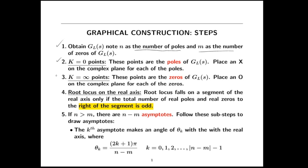Then you need to think about where are the k equals 0 and k equals infinity points. Those are the points in the root locus when the design parameter k is either equal to 0 or infinity. The root locus is all possible closed loop pole locations for all possible values of k positive. The k equals 0 points in the root locus are just the poles of the loop transfer function, and the k equals infinity points are the zeros of the loop transfer function. We denote those in the normal way with x's and o's.